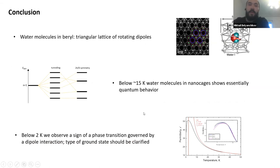And I come to the conclusion. Water molecules in beryl is a very good realization of a lattice of freely rotating dipoles. Each water rotator below 30 Kelvin behaves in an essentially quantum way. And below 2K, we observe the sign of transition governed by dipole interaction. But the exact type of ground state is not figured out yet. So it should be clarified in the future.